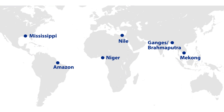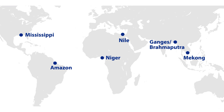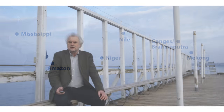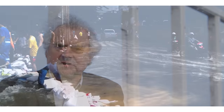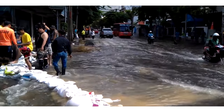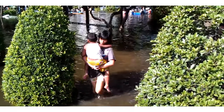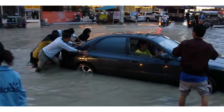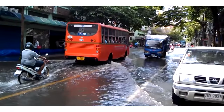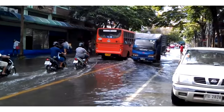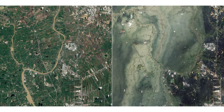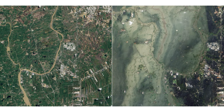Rivers form deltas at their mouth all over the world and bring high quantities of sediment to the world ocean. Low-lying delta plains are highly vulnerable to a wide range of natural and man-made hazards, as you can see for instance in the partially flooded Chao Phraya delta near Bangkok in Thailand. The delta plain suffers permanently from sea level rise inundating the lower parts, and periodically from river floods due to heavy rainfall, as in October 2011.